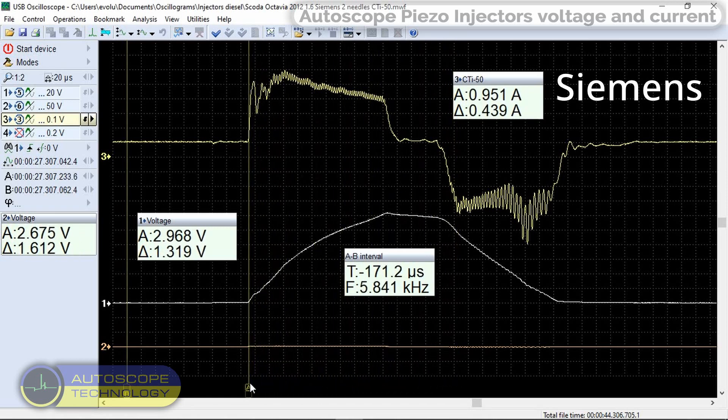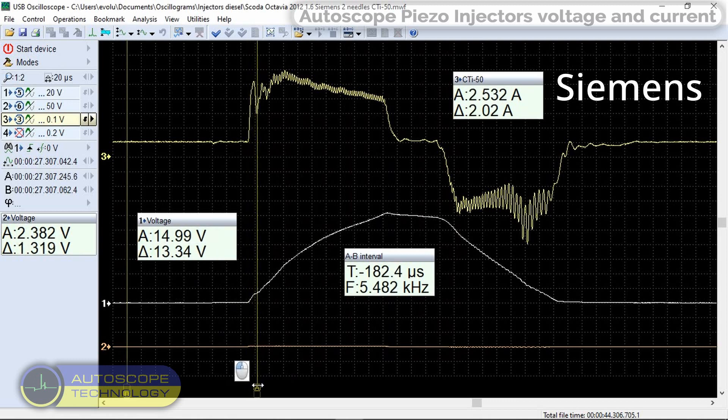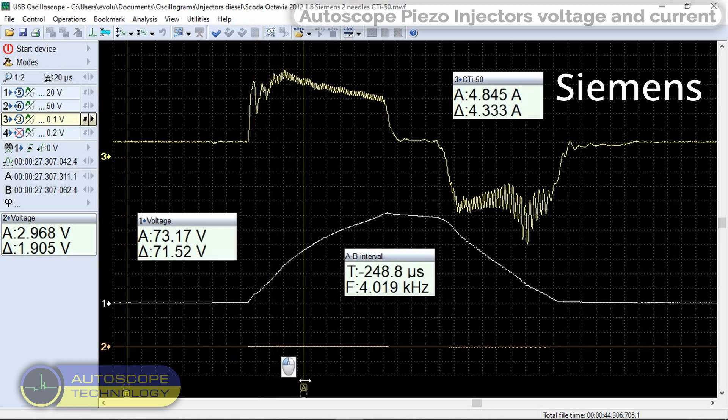The second channel is the injector supply voltage pulse. Its amplitude can reach a value of 125 volts.